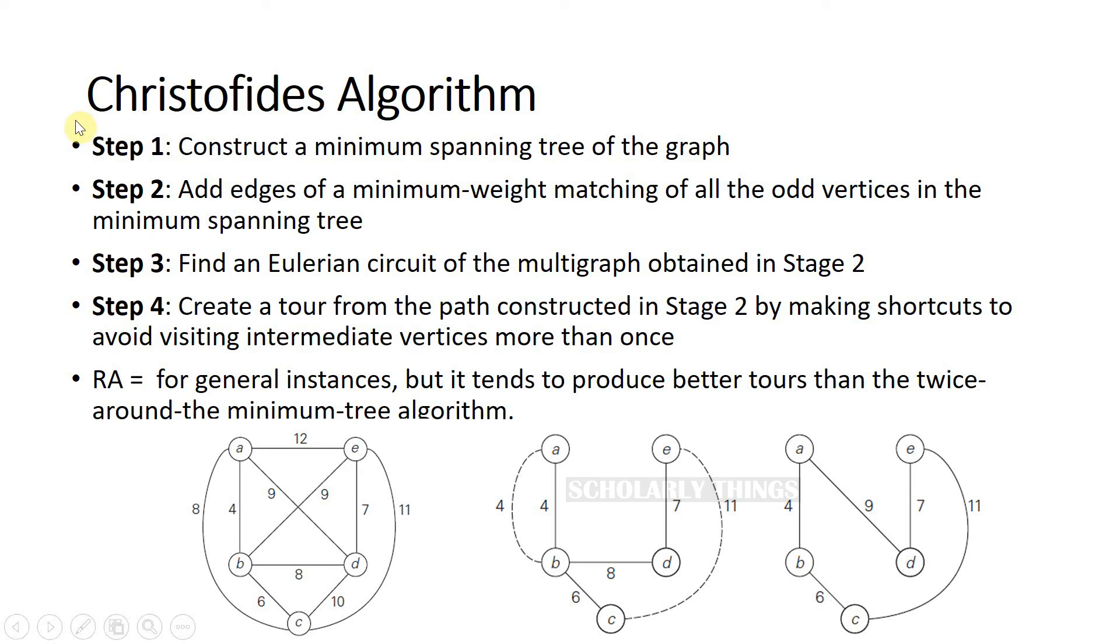In Christofides algorithm, step one is to construct a minimum spanning tree of the graph. Step two is to add edges of a minimum weight matching of all the odd vertices in the minimum spanning tree. Step three is to find an Eulerian circuit of the multigraph obtained in stage two. Step four is to create a tour from the path constructed in stage two by making shortcuts to avoid visiting intermediate vertices more than once.